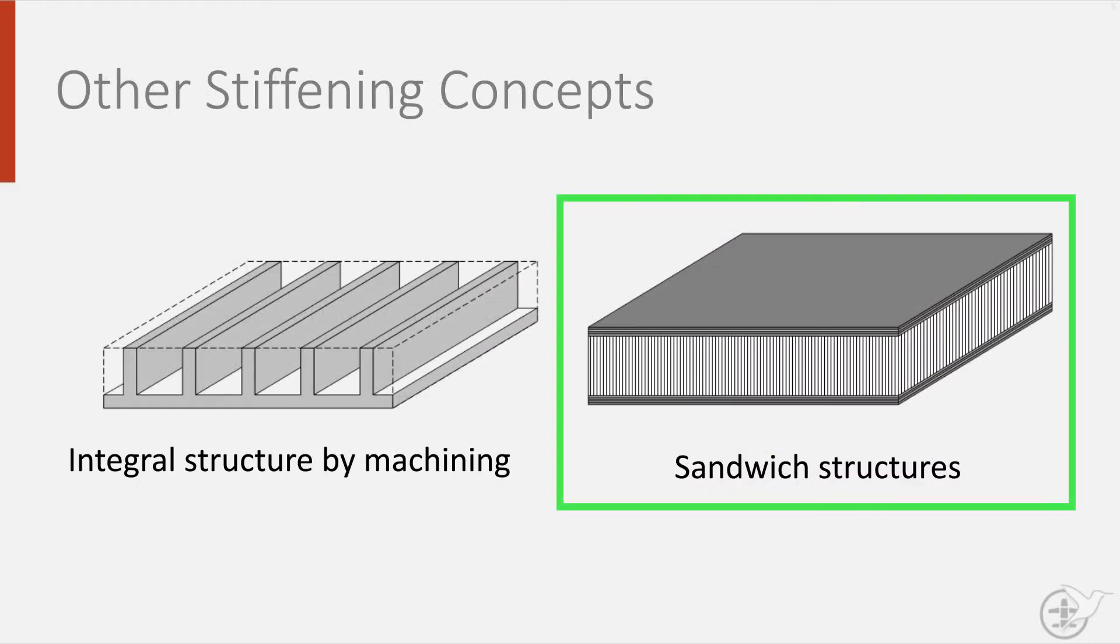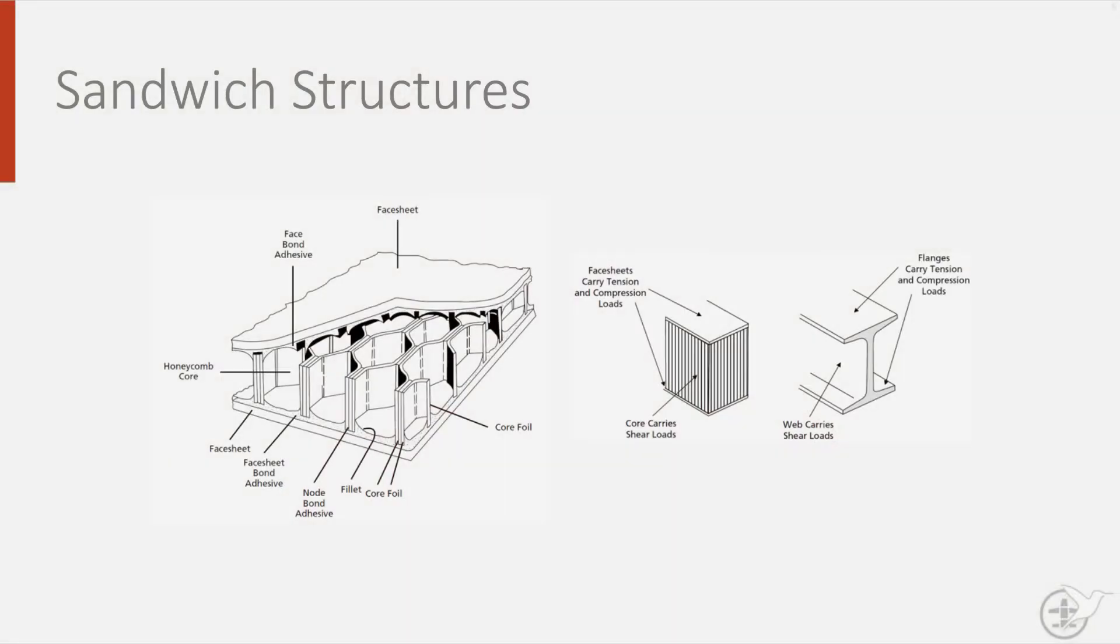A sandwich structure, such as this one, consists of two smooth faceplates, made from metal or composites, with in between a low density core. In fact, you probably have seen it before in your average cardboard box, which is also a sandwich structure. The core of these structures can be honeycomb, made from either polymers or metals, or made of foam.